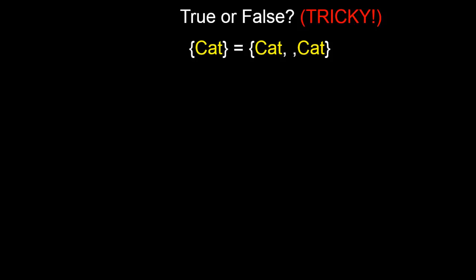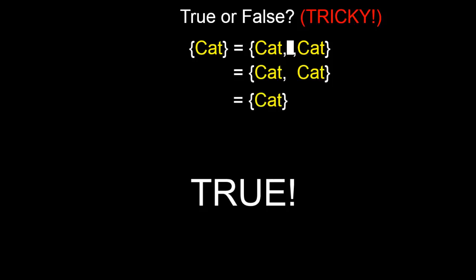It turns out that the answer is yes, they are the same thing. When we have a blank space such as we had on the set on the right, we treat it as literally being nothing—there is no element there. Hence the set on the right is simply cat, cat. Going by our rule that repeated elements don't count, this is simply the set cat. Therefore, yes, the set cat is the same as the set cat, blank space, cat.